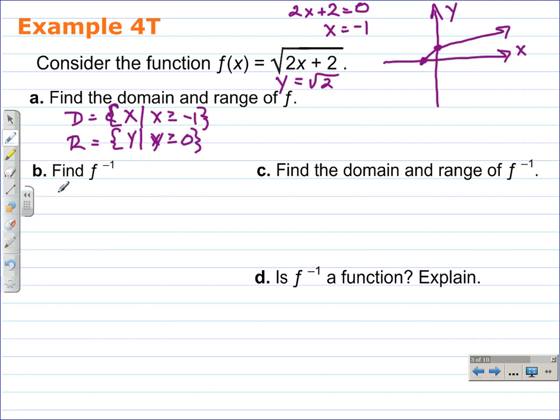When I write this down here, I'm going to write it with a y instead of the f of x. y equals the square root of 2x plus 2. To find the inverse of an equation, all we do is simply switch the x and the y, giving us x equals the square root of 2y plus 2.